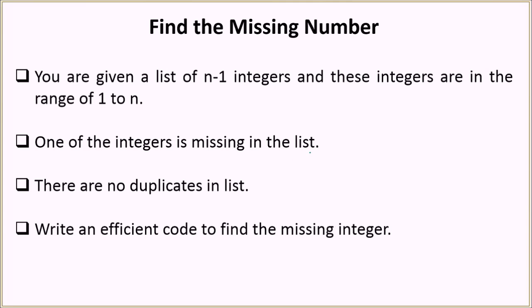In this problem you will be given n-1 integers and these integers will be in the range of 1 to n. There will be 1 integer which will be missing in the list and also there will be no duplicates in the list. So from 1 to n there are total n integers but you will be given only n-1 integer. So 1 integer out of this will be missing and we basically have to find that integer.